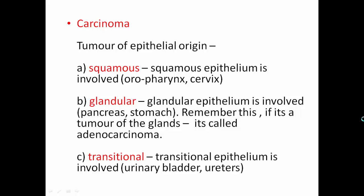When glands are involved, we call that tumor an adenocarcinoma. Barrett's esophagus is an example of adenocarcinoma — it represents dysplasia which later becomes adenocarcinoma. Since glandular tissue is involved, we call it adenocarcinoma.